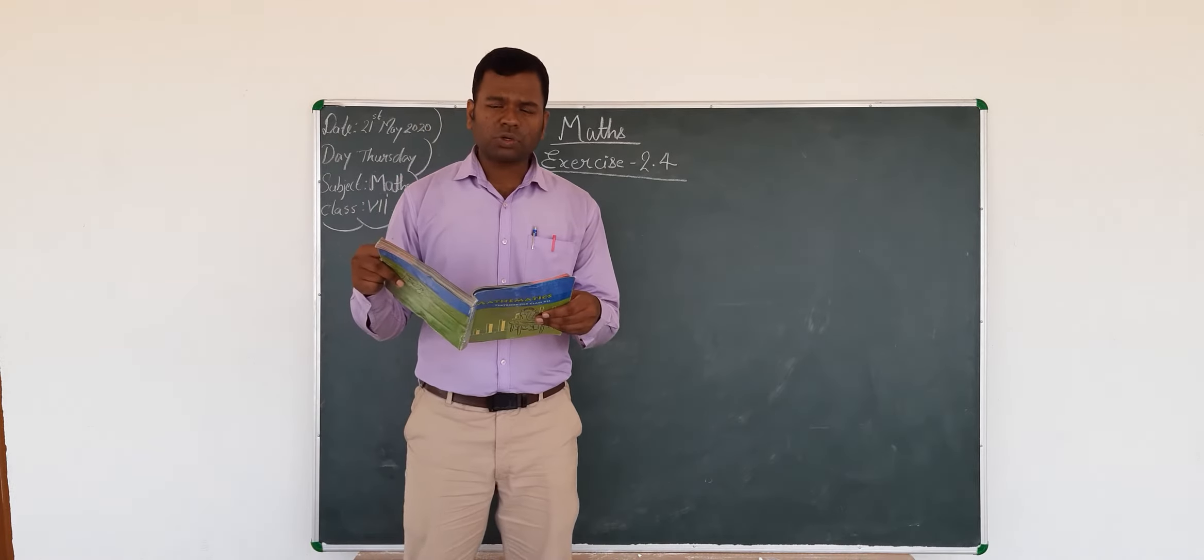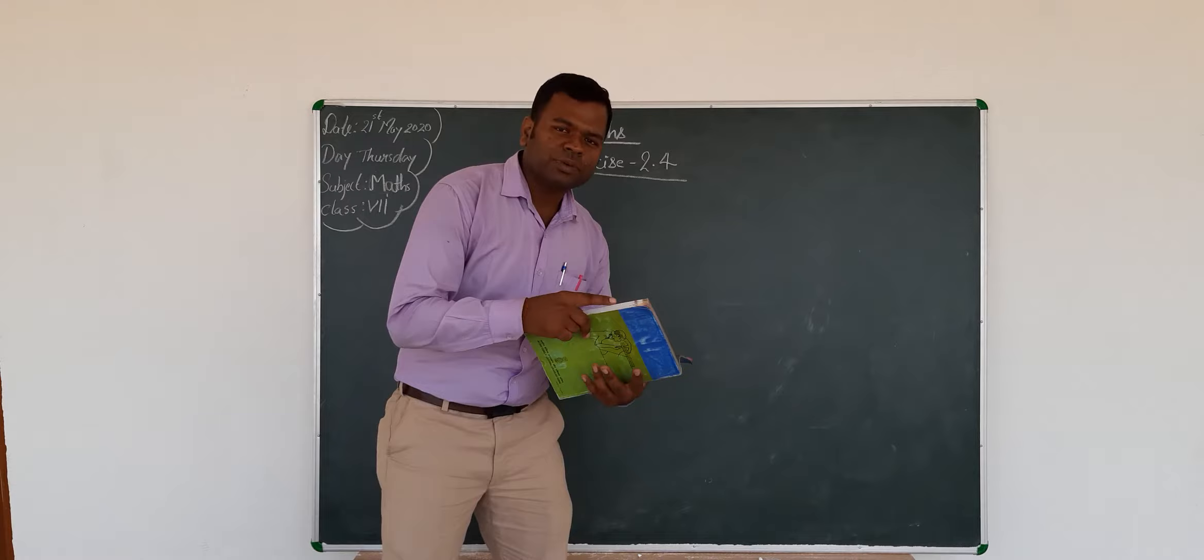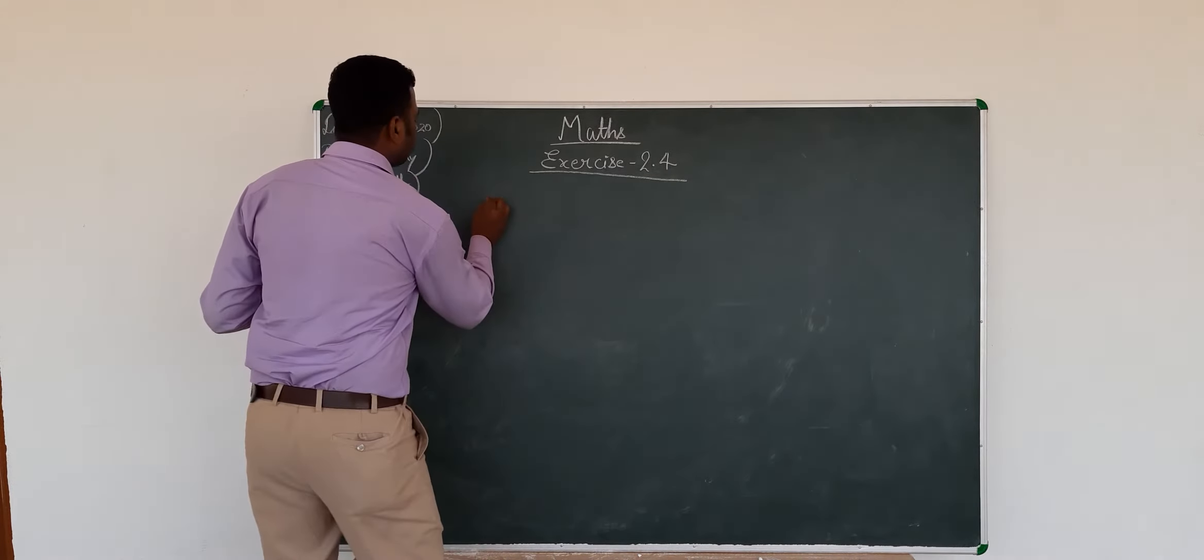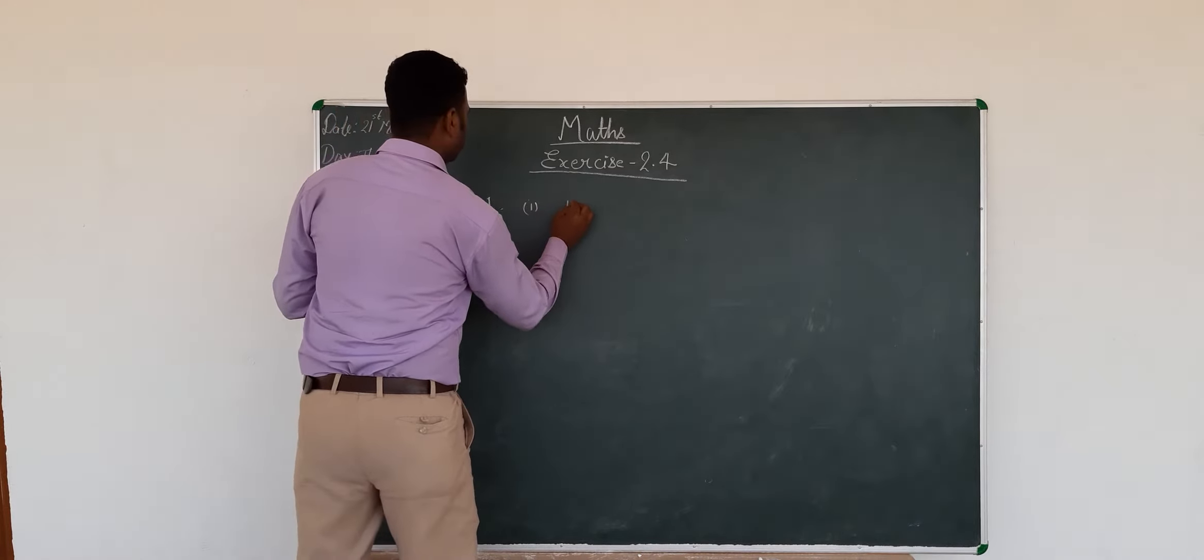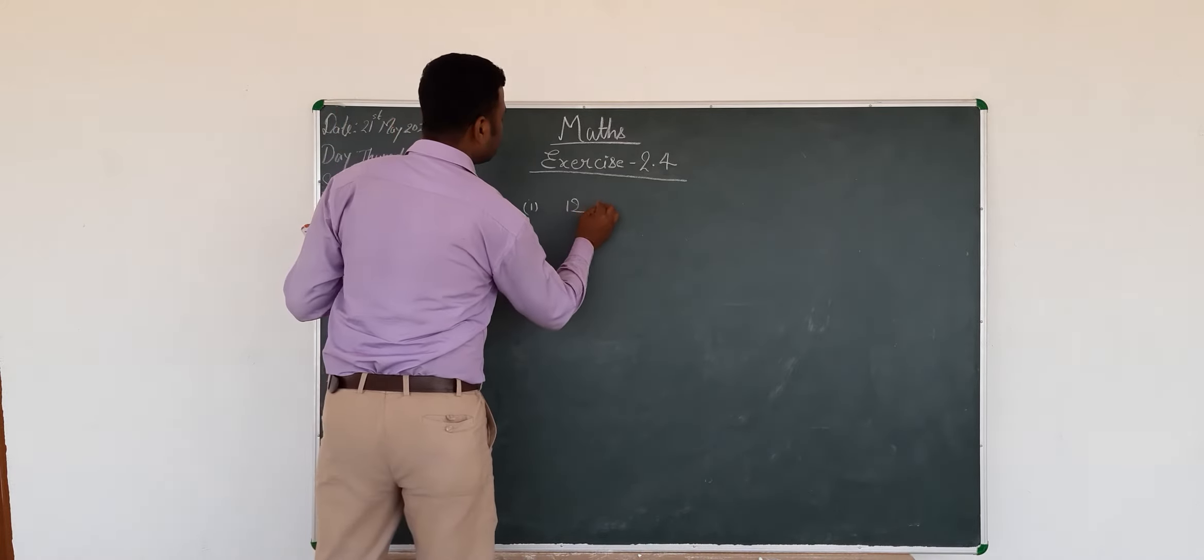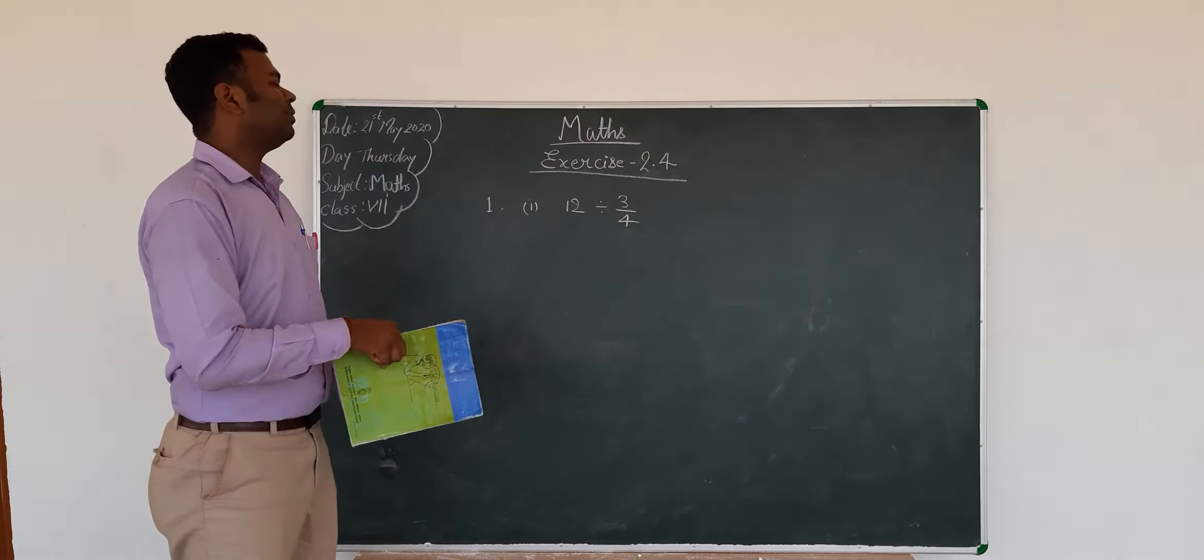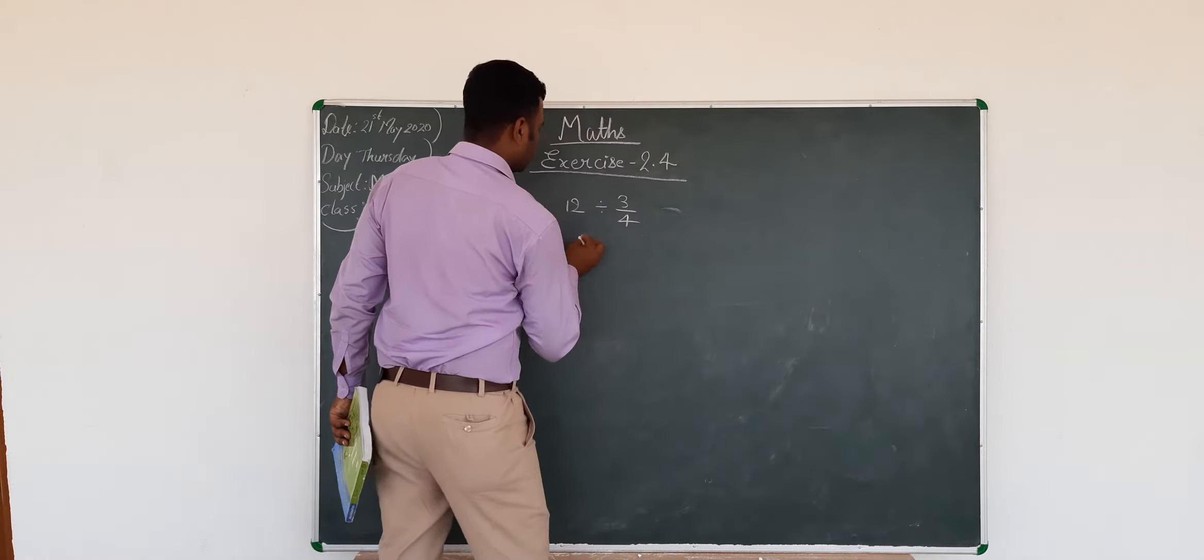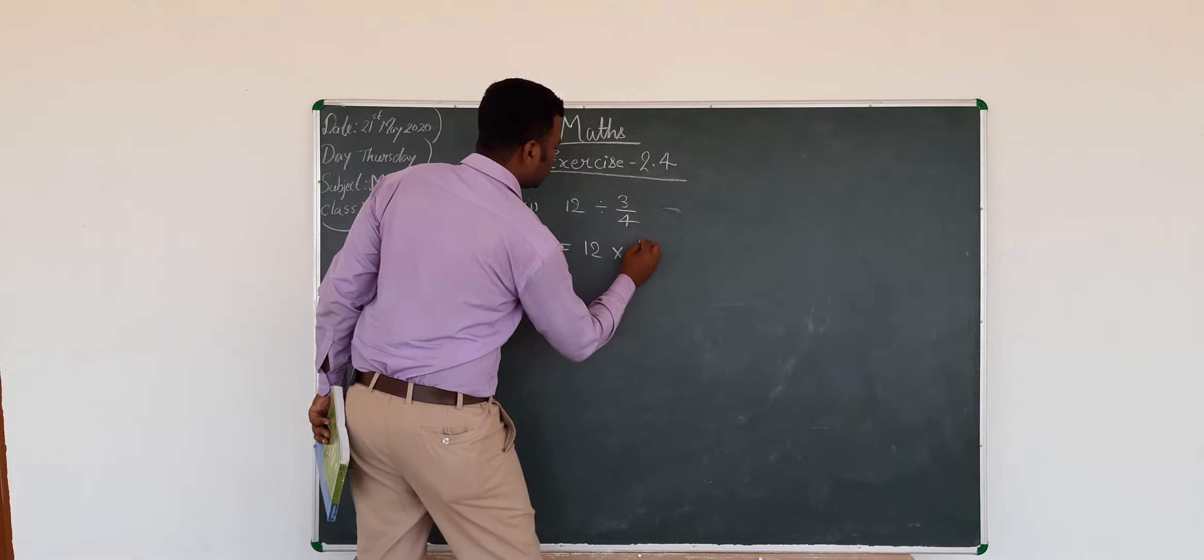I am going to continue exercise 2.4 from page number 46. The first question is: Find 12 divided by 3/4. You have to solve this problem. It is equal to 12 multiplied by the reciprocal of 3/4, which is 4/3.